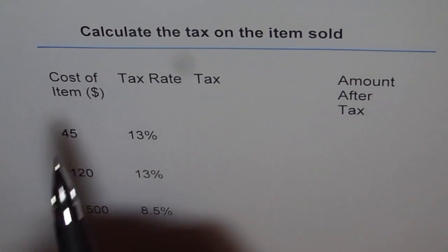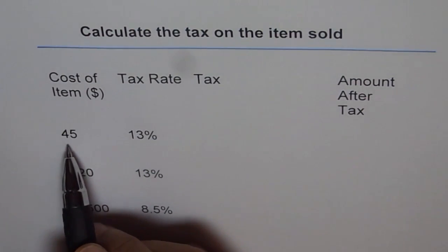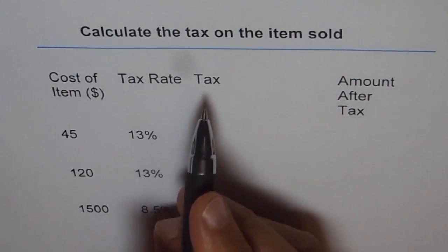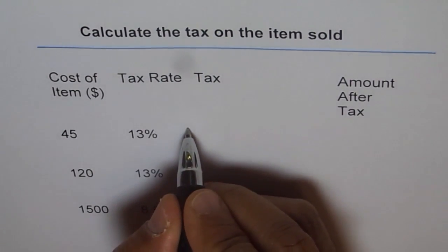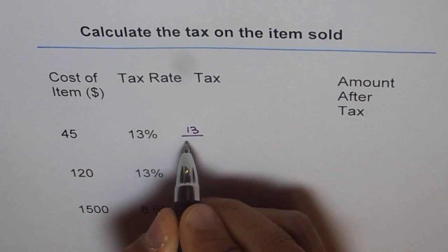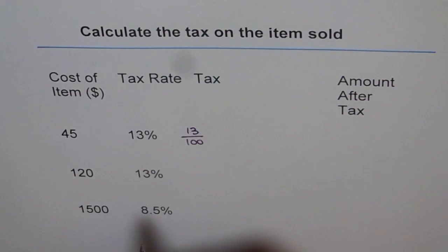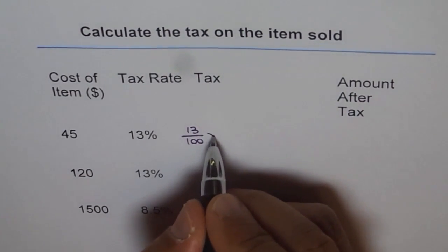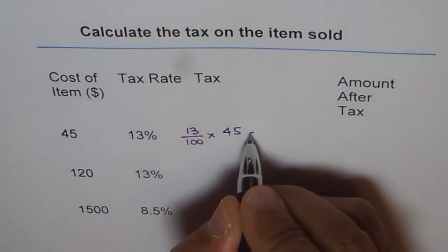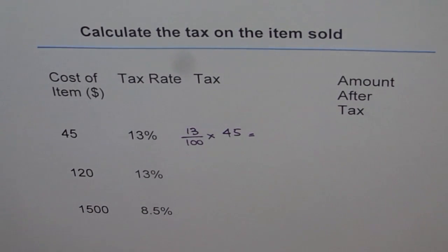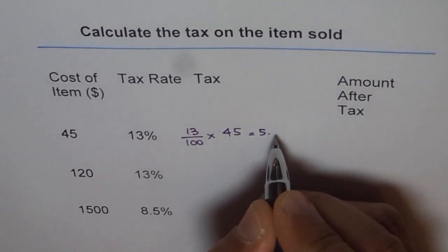So, it is like the item is costing 45 dollars and the tax rate is 13%. So what is the tax? Tax is 13% of 45. So tax is 13% off. 13% is 13 over 100. We can write as 0.13 also. Off means times 45. That is the tax.